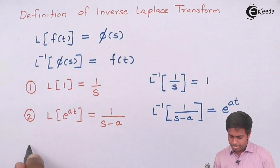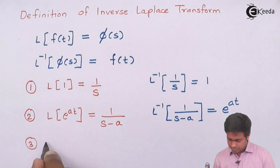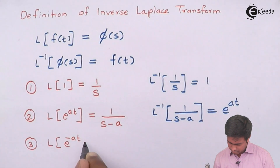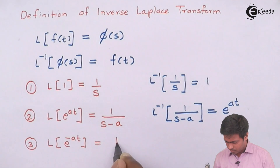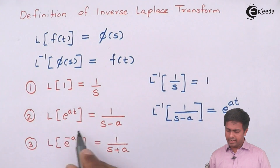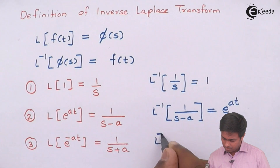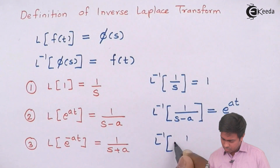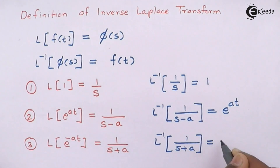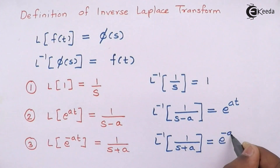Formula number three is exactly similar to the second one. If we take L⁻¹{1/(s+a)}, then we get e^(−at).